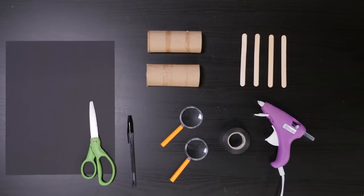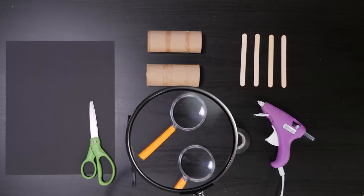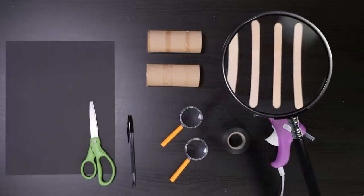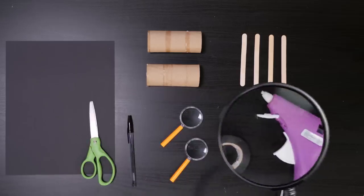Now we've got a way to pass the message. But I'll make binoculars so we can see that it arrives safely. For this, you'll need two toilet paper rolls, two small magnifying glasses, black card stock, four popsicle sticks, electrical tape, scissors, a pencil, and a hot glue gun.